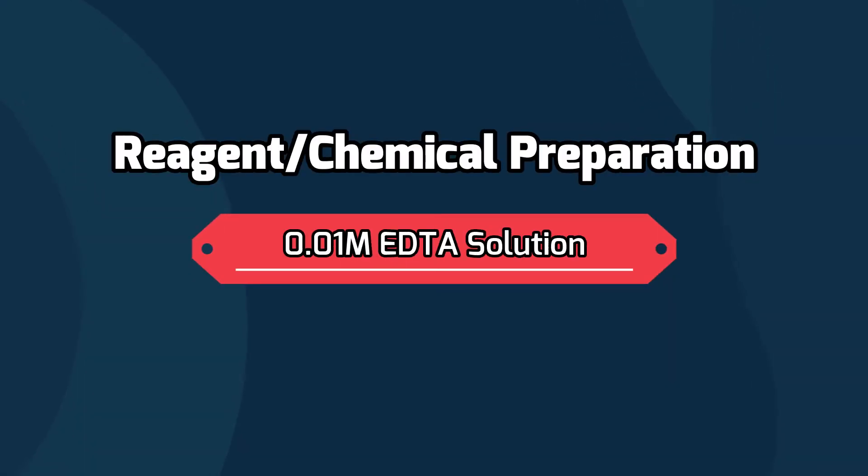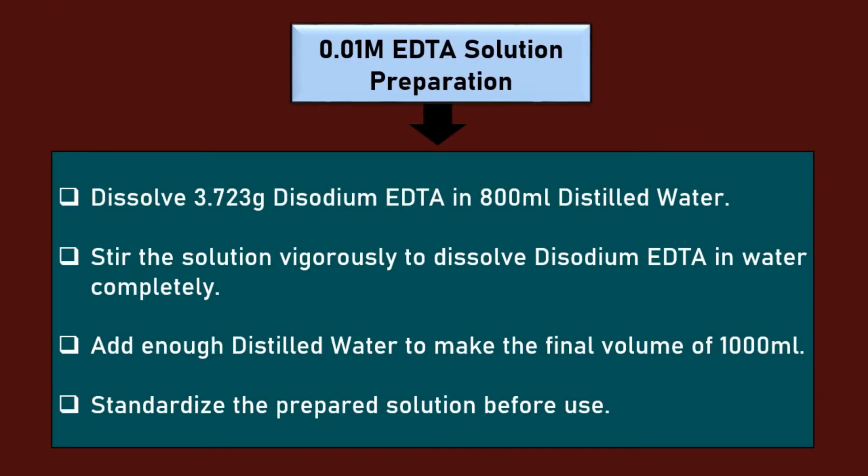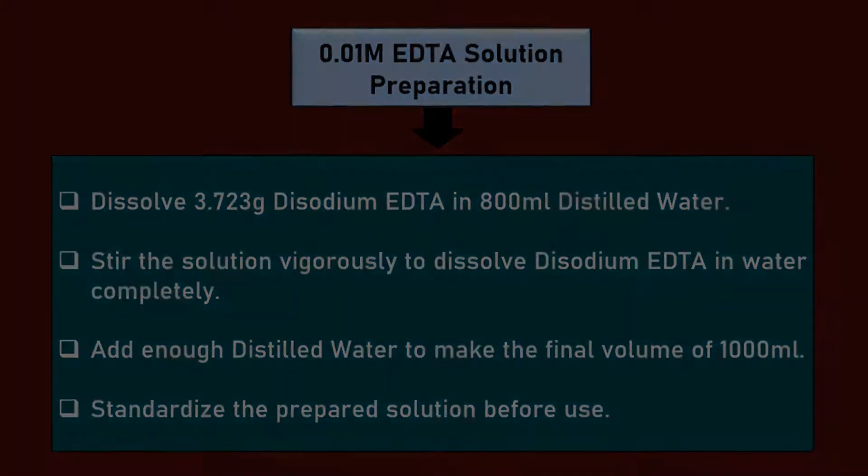For the preparation of 0.01 molar EDTA solution, dissolve 3.723 grams of disodium EDTA into 1000 ml distilled water. Standardize the solution before use.